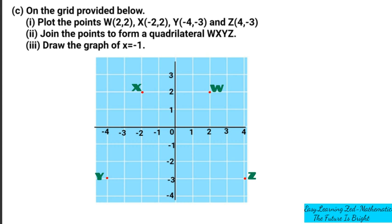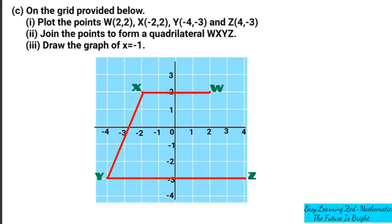So we are going to draw this. First we draw the line from W to X. Then we join that line by a line from Y to X. Then we join that line by a line from Z to Y. Then we also draw a line which goes back to W, from Z to W.